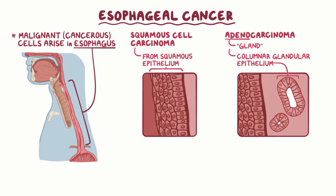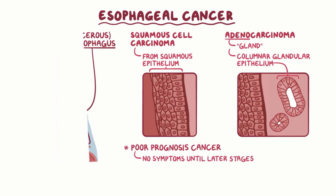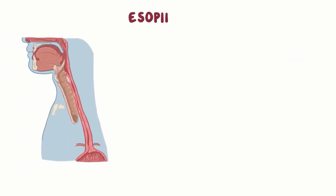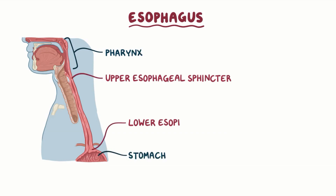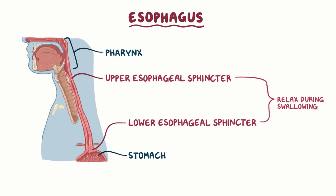Esophageal cancer is generally considered a poor prognosis cancer, because it doesn't cause symptoms until later stages. The esophagus is a long tube going from the pharynx to the stomach, connected to the pharynx through the upper esophageal sphincter, and to the stomach through the lower esophageal sphincter. Both relax during swallowing to allow the passage of foods or liquids. Additionally, the lower esophageal sphincter is tightly closed between meals to prevent acid reflux.